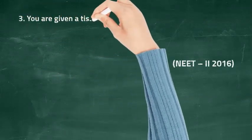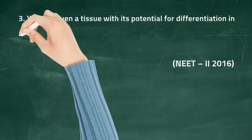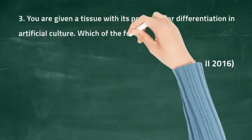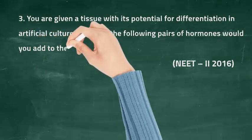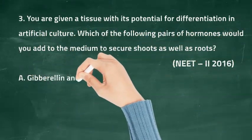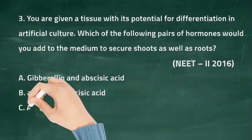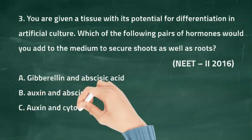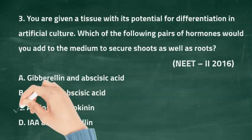Question three: you are given a tissue with its potential of differentiation in artificial culture. Which of the following pairs of hormones would you add to the medium to secure both shoots as well as roots? Option A: gibberellin and abscisic acid, option B: auxin and abscisic acid, option C: auxin and cytokinin, option D: IAA and gibberellin. The right answer is option C, auxin and cytokinin.